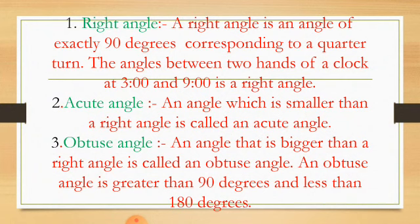An acute angle is an angle which is less than 90 degrees. When the distance between two hands of a clock becomes less, the angle formed is an acute angle. An acute angle is smaller than a right angle.